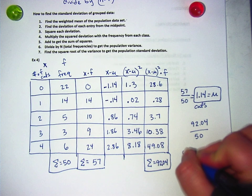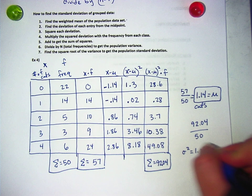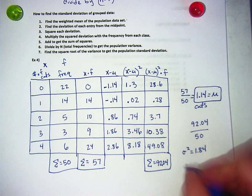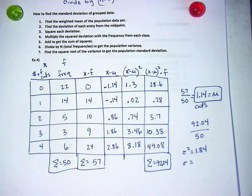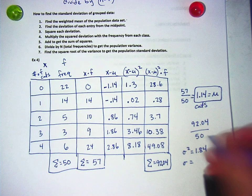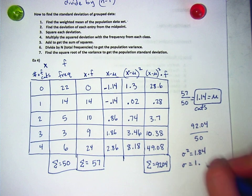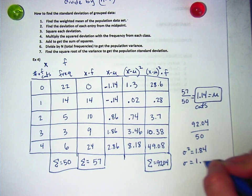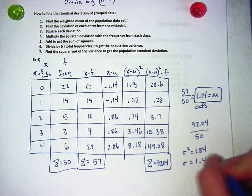So now my variance is 1.84 cats, and my standard deviation is about 1.4 cats.